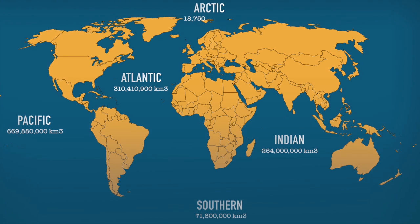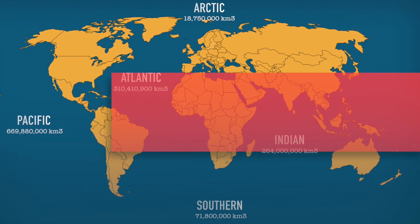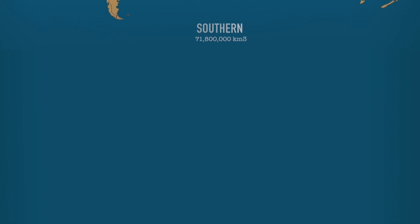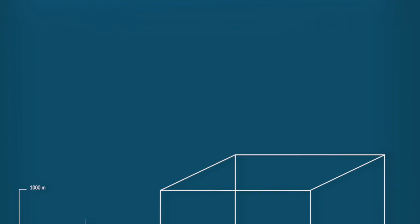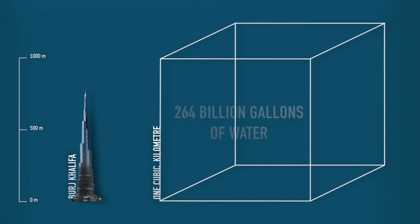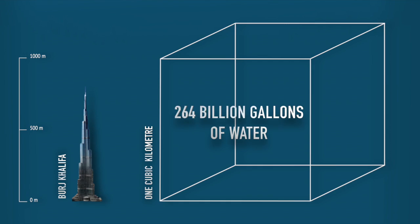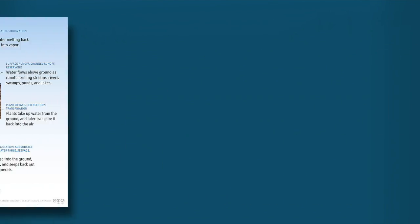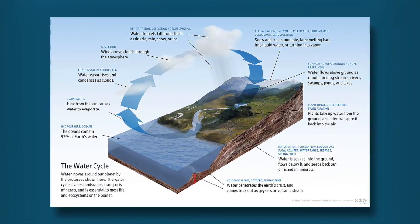In total it's 1 billion 335 million cubic kilometers worth of sea. One cubic kilometer equates to 264 billion gallons of water. Applying the circular principle of the water cycle, you get a lot of rainfall.